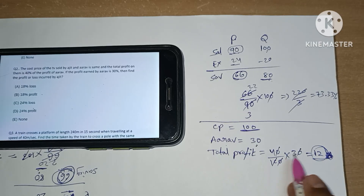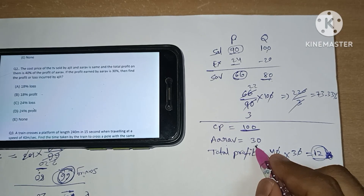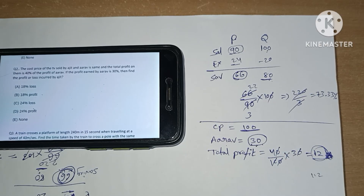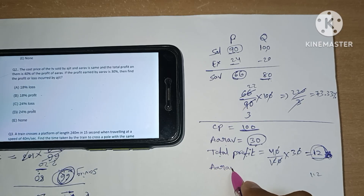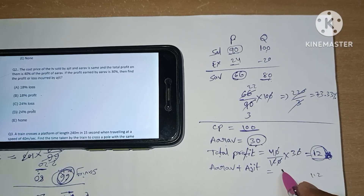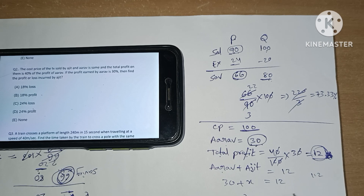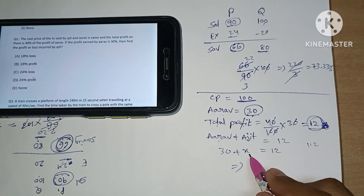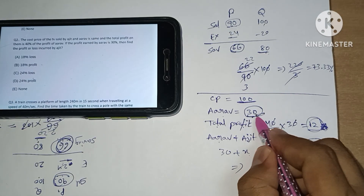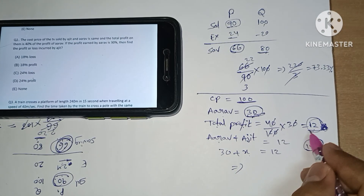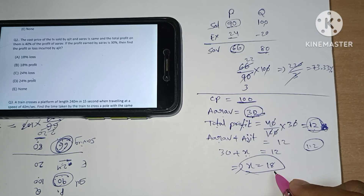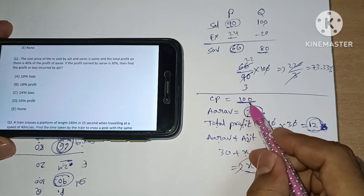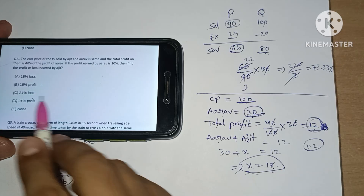Total profit means they both together effectively yield 12. But Arav got 30 rupees profit. So Arav's profit plus Ajit's profit equals 12, meaning 30 plus x equals 12. It is clear that the total is less than Arav's profit alone, so Ajit made a loss. x equals minus 18, so the loss is 18 rupees, which is 18% loss. Option A is our answer.